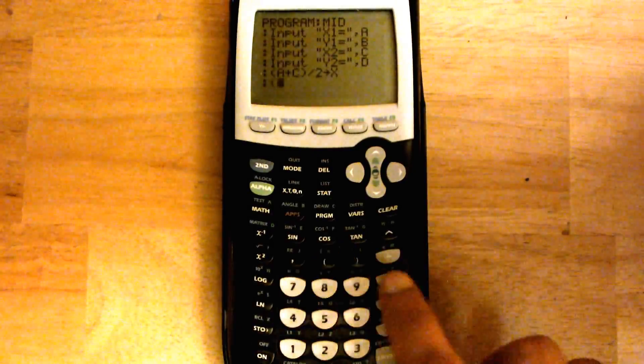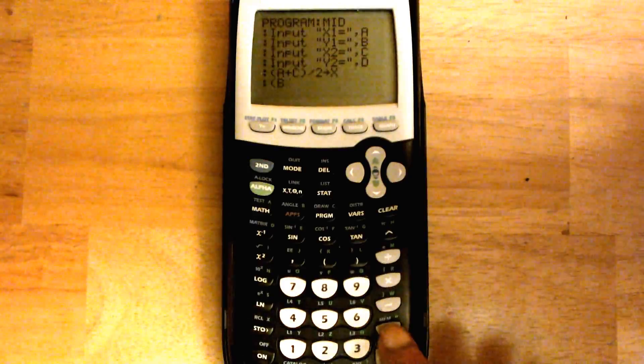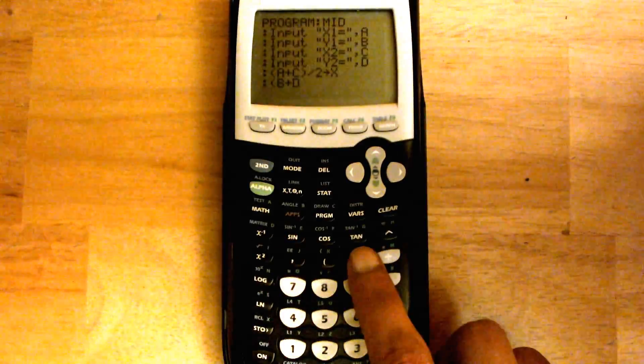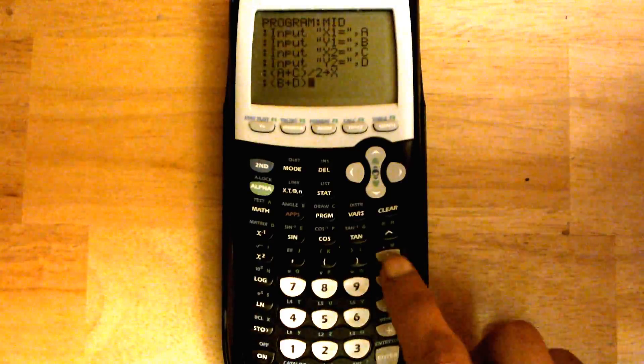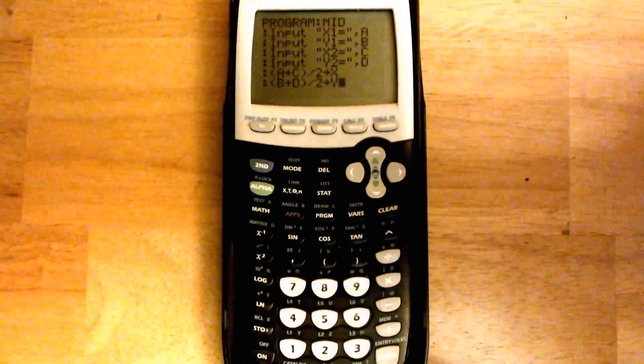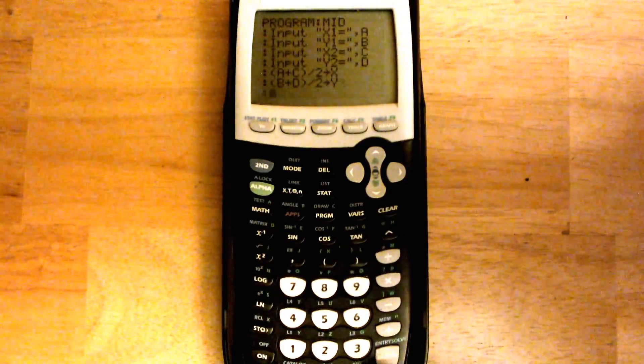Open parenthesis, alpha b, plus, alpha d, close parenthesis, divided by 2. And then we're going to store this into y, so alpha 1. Then we're going to hit enter again.